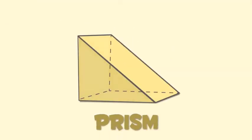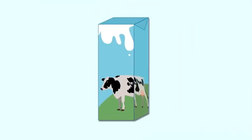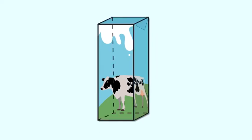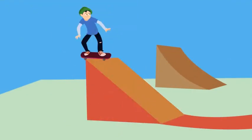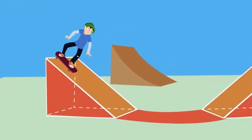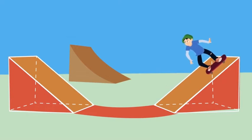This is a prism. Both faces of the prism are identical. There are many types of prisms. This milk carton is a prism. As you can see, both of its faces are identical squares. But in this prism, its faces are triangles. It looks like a skating ramp. Wow, so fast!